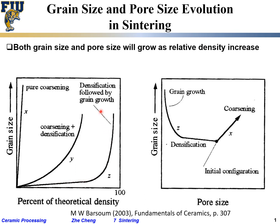A good sintering scenario would be densification followed by grain growth. Initially you have very little increase in grain size but significant increase in relative density. Towards the end — typically beyond 85 percent relative density — it becomes very difficult to limit grain growth, and it tapers up dramatically. People try to fight this, but it's very tricky, especially if you want full densification.